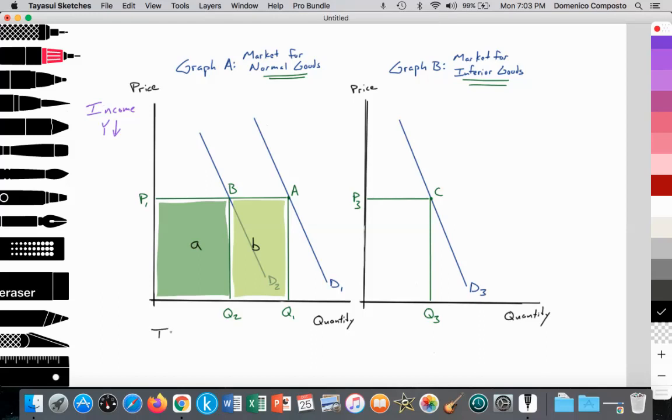Okay? So a few notes here. Before the fallen income, total revenue is equal to the price of P1 multiplied by the quantity of consumption along D1, which is Q1. And that's equal to the surface areas of A plus B.